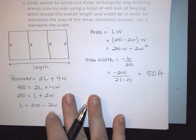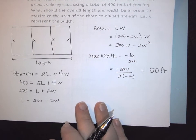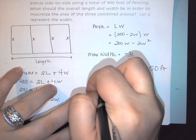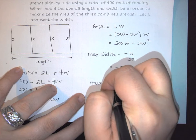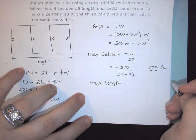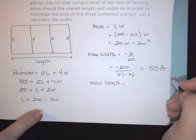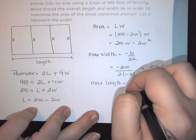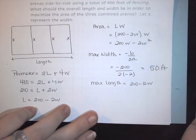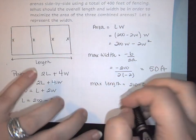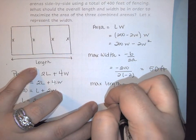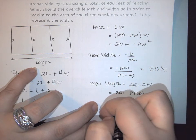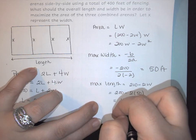Now that being said we also have to find the maximum length. So in order to find your max length we are going to use the length formula that we have. So here this is going to be 200 minus 2W. We found W to be 50, so my max length is going to be 200 minus 2 times 50, which is going to give me 100 feet.